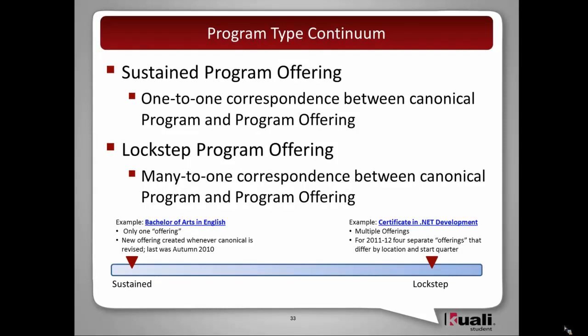Once the canonical program is established or revised, a new offering will be created. In this particular example, the last was in autumn of 2010. At the far end of the spectrum is the lockstep program offering, and in those programs there's a one-to-many correspondence between the canonical program and the program offering.